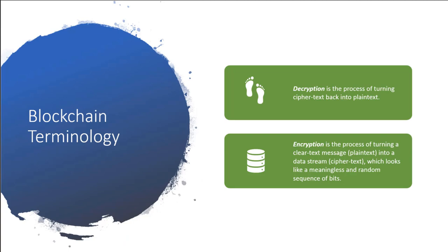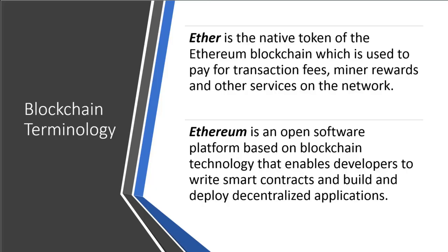Decryption and encryption: encryption is taking clear text and making it into ciphertext, and decryption is the opposite. Some terms you'll hear around Ethereum: Ether, Ethereum, and gas. Ether is the token of the Ethereum blockchain — this is how you pay for using the Ethereum network and how miners get paid. Ethereum is the actual platform itself. I like to compare Ethereum to the platform where the train rides on, and Ether is the ticket or token you need to ride the train — it's how you pay your fare.